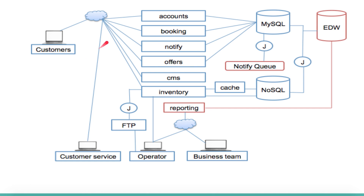What operations do customers perform? They go into the system and register themselves, so we need a module — an API or web service — to create an account and get user profile information. That's why we have accounting APIs, or RESTful services, which can be microservices running on Docker containers hosted on Google Cloud or AWS.